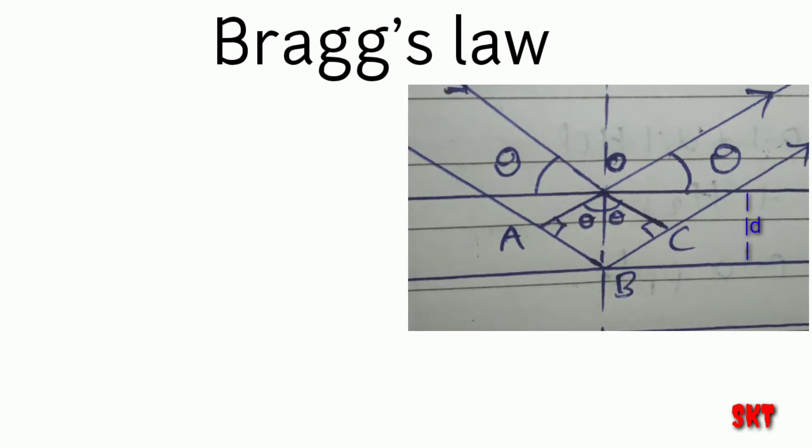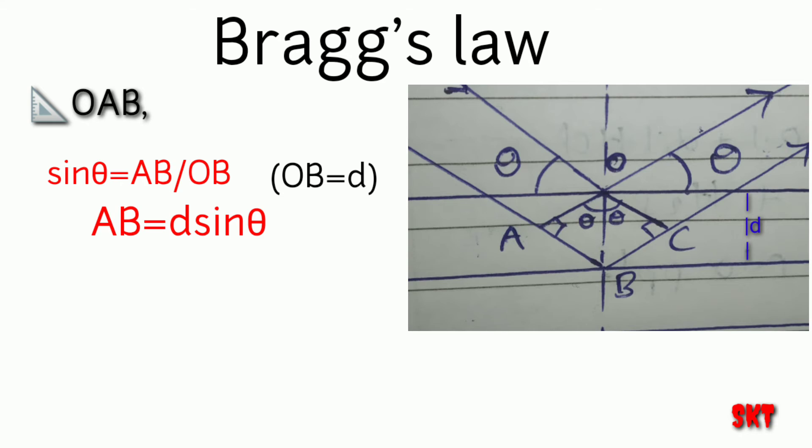Now let us consider triangle OAB in that sin theta is equal to AB divided by OB that is opposite side divided by hypotenuse. By the figure we could conclude that OB is equal to D that is distance between the equidistant planes. So we can conclude as AB is equal to D sin theta.